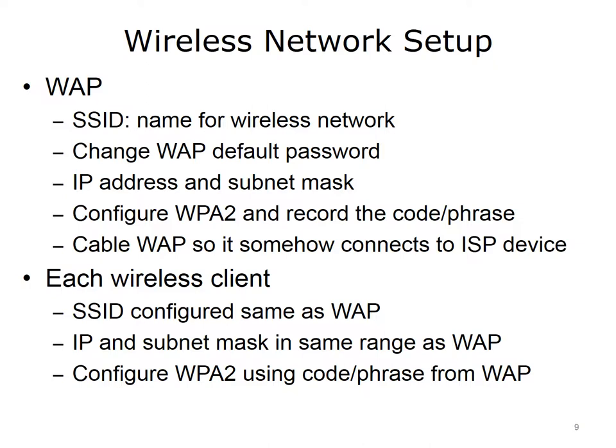Next, attach the cable between the WAP and the ISP device. You will need to configure each wireless client. One configuration is to ensure that the wireless client has the same SSID configured on the WAP. The wireless client also needs an IP address and subnet mask that is in the same IP address range as the WAP. The WAP and client cannot have the same IP address, although they should have the same subnet mask. Ensure that all devices are configured with unique IP addresses and the same subnet mask. Finally, configure WPA2 using the code or phrase you wrote down when you configured the WAP.